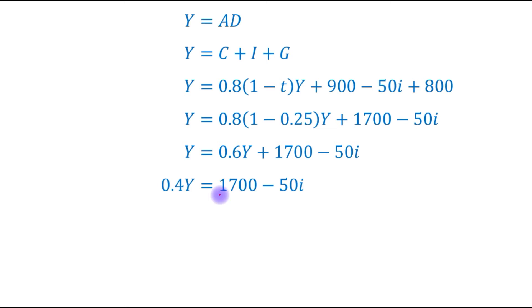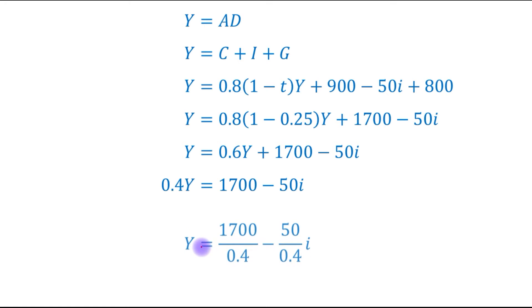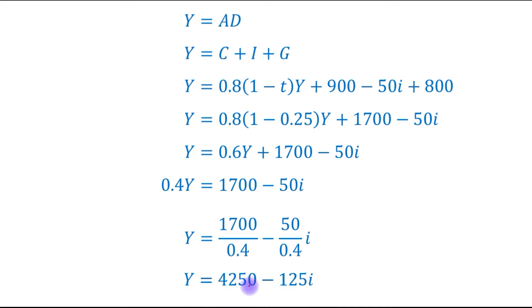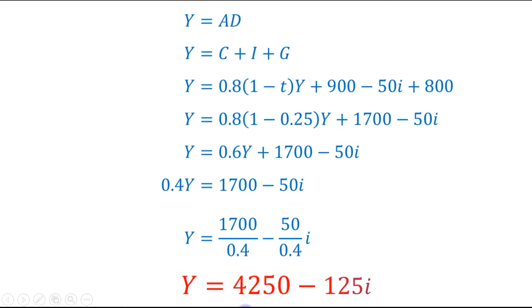When we solve this, we get 0.65Y plus 1700 minus 50i. In the next step, Y minus 0.65Y becomes 0.35Y, which equals 1700 minus 50i. Finally, this is the equation of the IS curve.